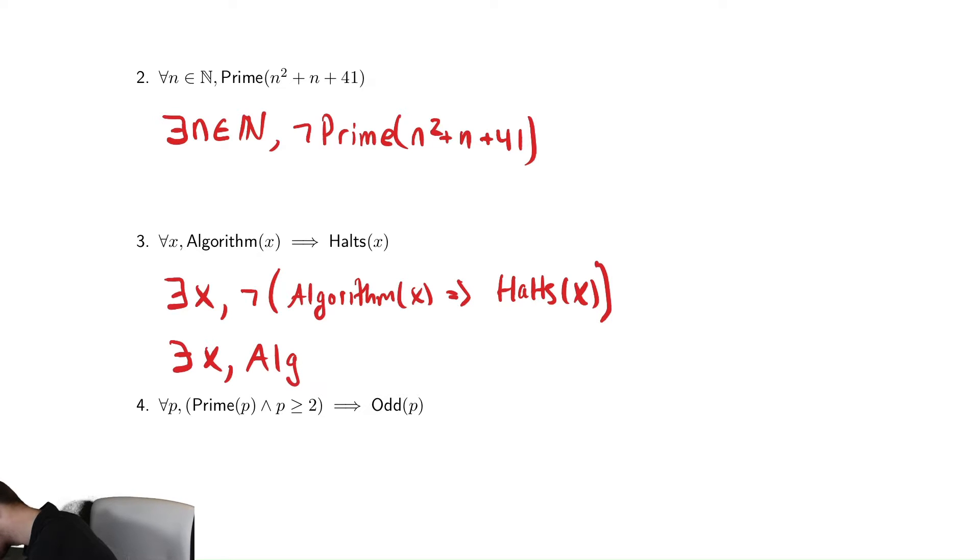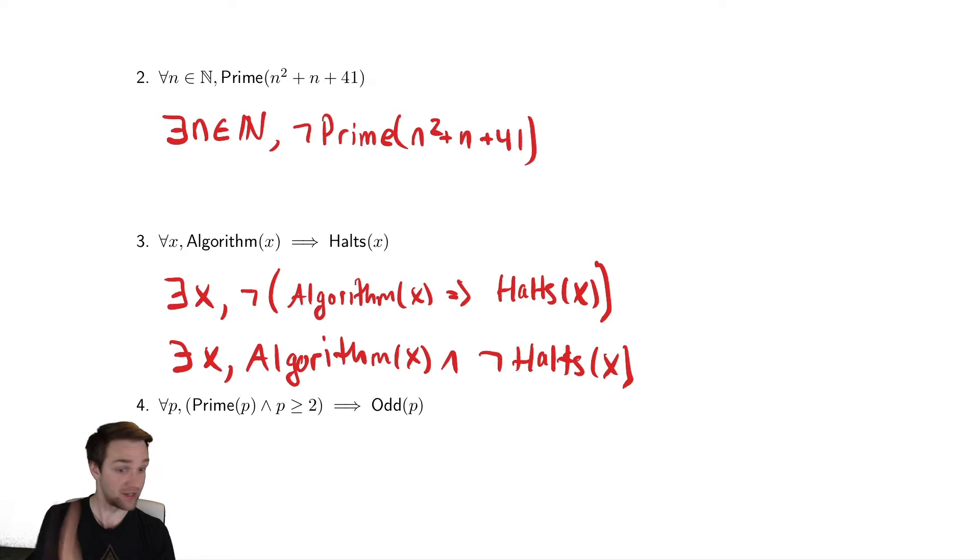So there exists an x such that x is an algorithm and that algorithm does not halt. Which should make intuitive sense again. If you say every algorithm halts, the opposite of that is that there's some algorithm that doesn't halt.